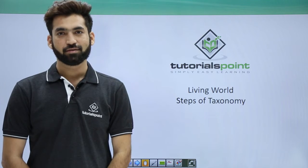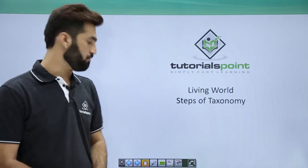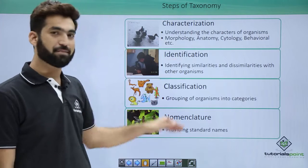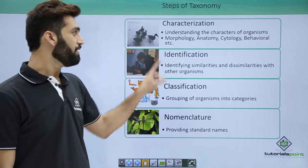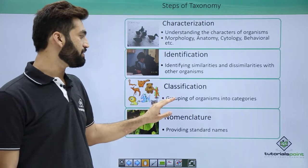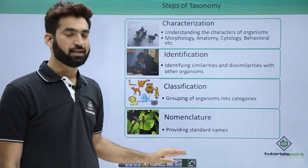In this session we'll be focusing on steps of taxonomy. As we've already discussed, there are four steps of taxonomy: characterization, identification, classification, and nomenclature.